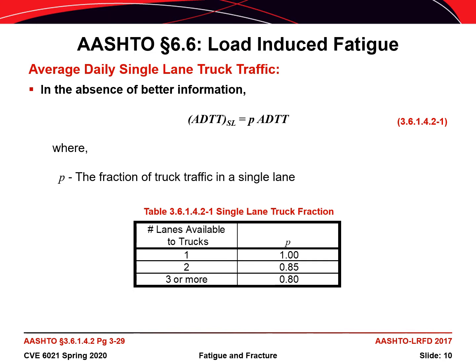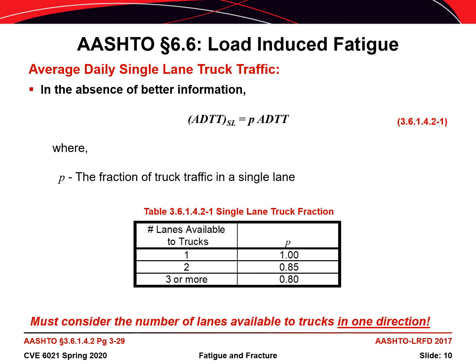In the absence of better information, the single-lane average daily truck traffic can be estimated using the truck fraction P. If there is only one lane available to trucks in a given direction, then all of the trucks must travel in that lane. If there are two lanes available in a given direction, it is assumed that 85% of the trucks use one lane and 15% use the other. If there are three lanes in a given direction, it's assumed that 80% of the trucks use one lane. Keep directionality in mind — if there is one lane in each direction and a thousand trucks crossing the bridge per day, it might be fair to assume half cross in each direction, but there are cases where that isn't necessarily true.